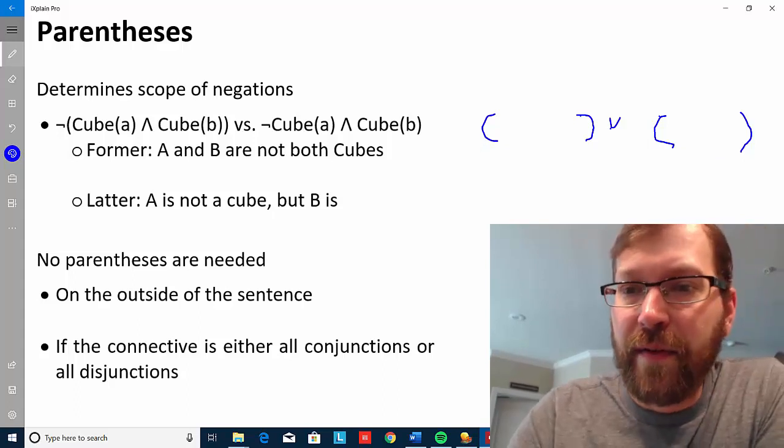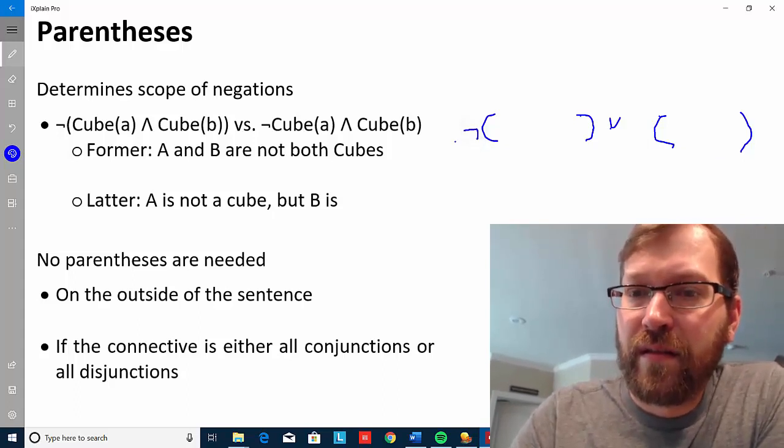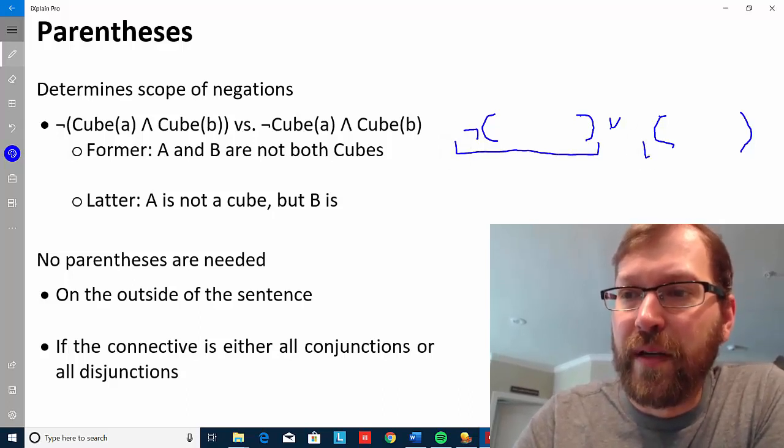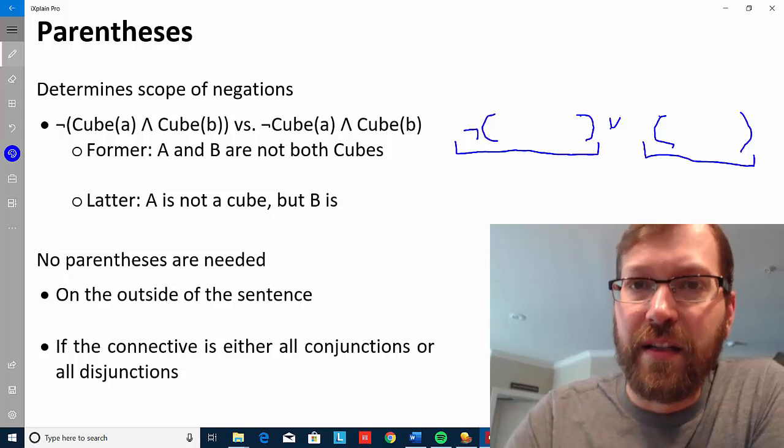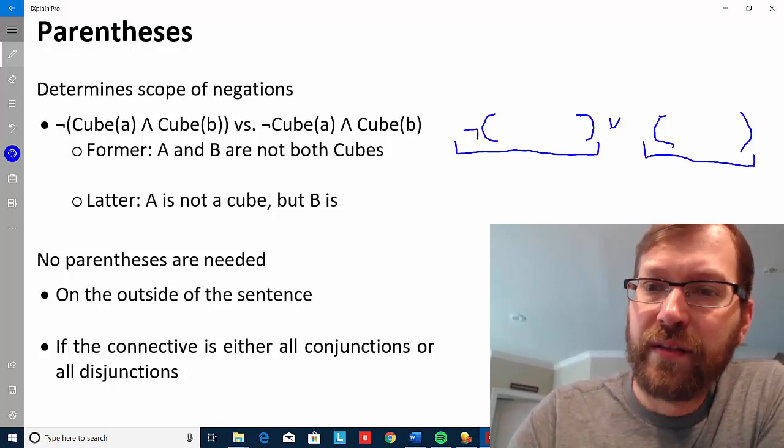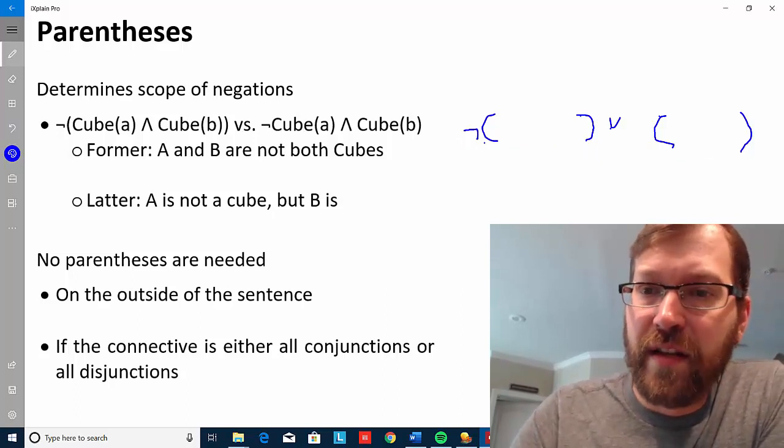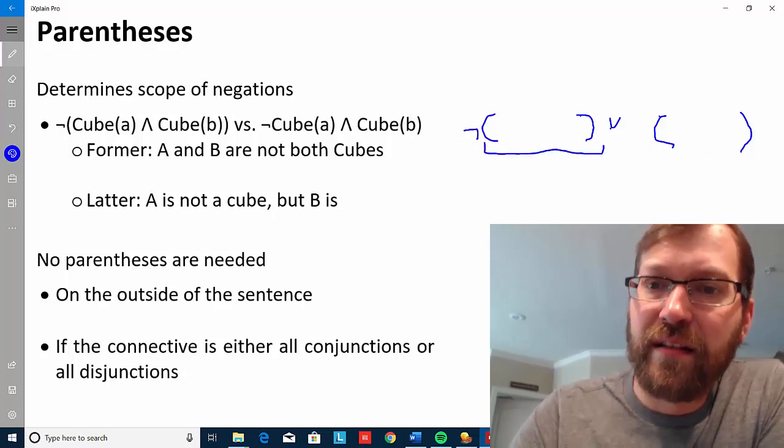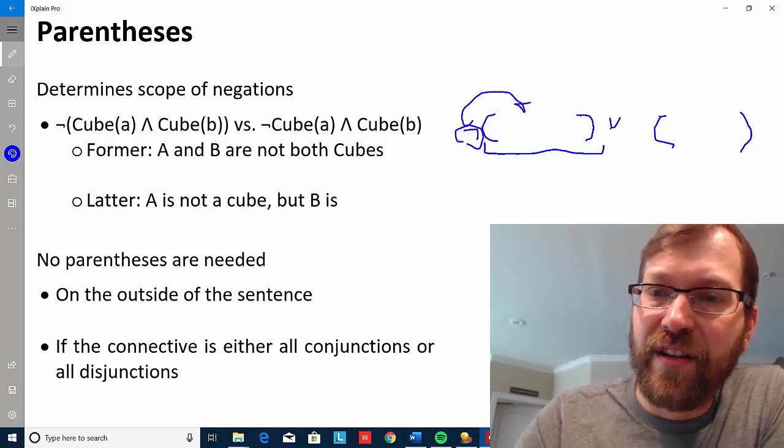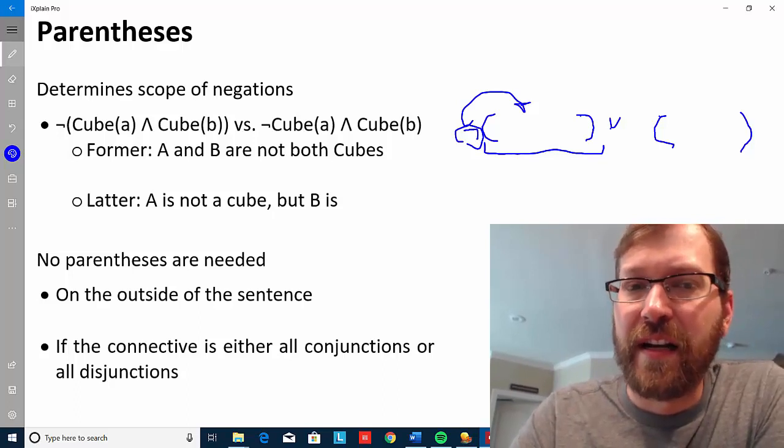And even if I had a negation out here, the disjunction symbol would be connecting those two sentences. Whereas, this set of parentheses let us know that this negation is connecting to this one, and that's the sentence that is modifying. That's the sentence that's saying that it's false.